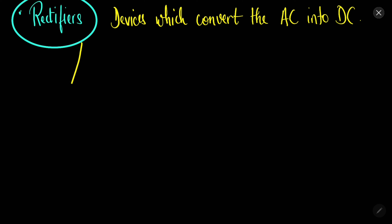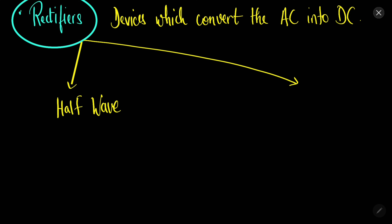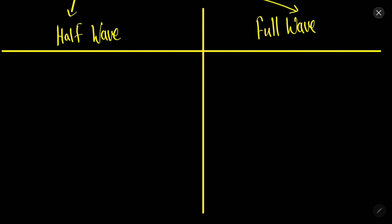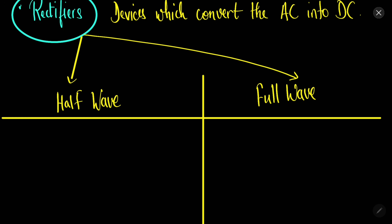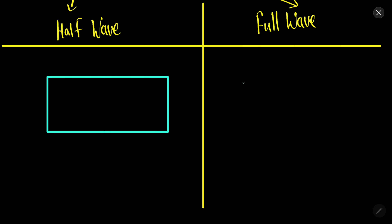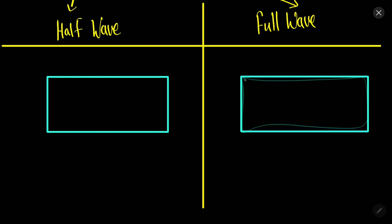We will mainly be discussing two types of rectifiers: one is the half-wave rectifier and the other is the full-wave rectifier. Half-wave and full-wave rectifiers are quite similar — the difference is that in a half-wave rectifier we have only one diode, while in a full-wave rectifier we have two diodes.